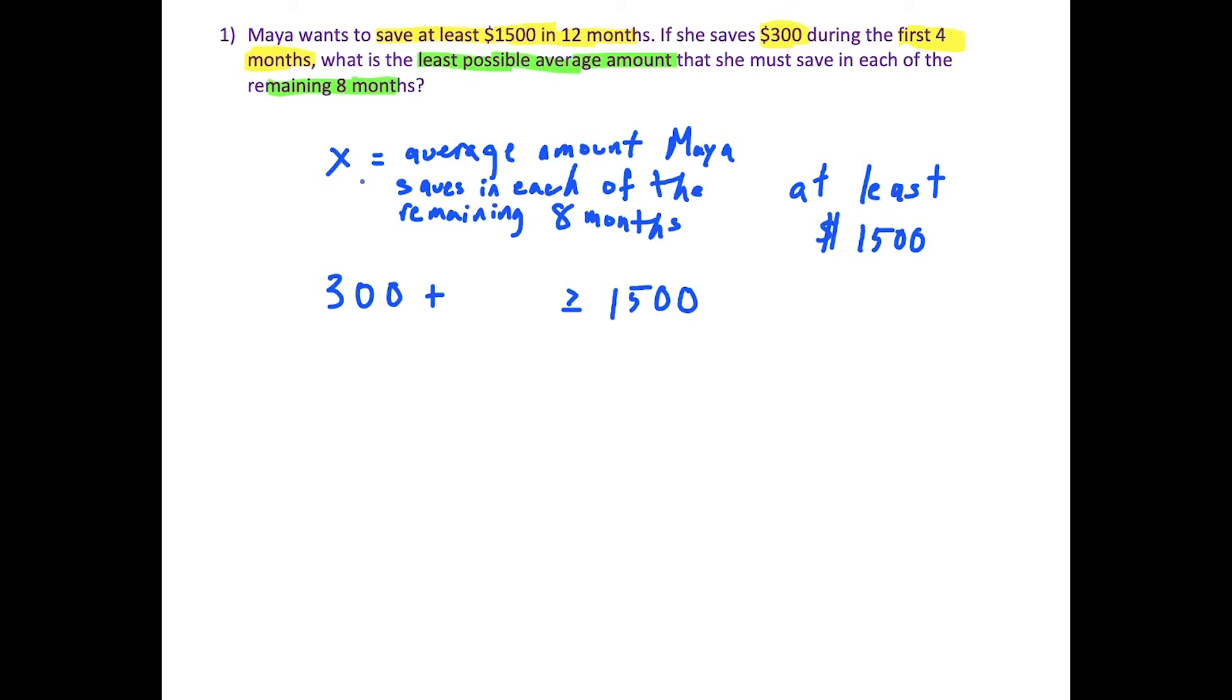If we think carefully here about how we defined x, well, if there are eight months remaining, then to find out how much Maya saves in the remaining eight months, we're going to multiply eight times x. Because if she saves x dollars on average each of the remaining eight months, then if we multiply x by eight, that tells us how much she saves in the eight months in total.